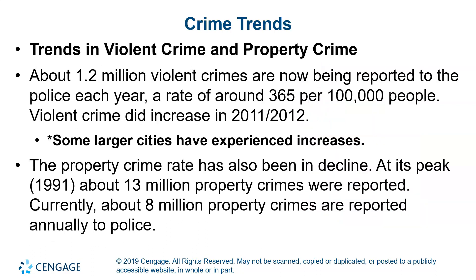About 1.2 million violent crimes are now being reported to police each year, a rate of around 365 per 100,000 people. Violent crime did increase in 2011 and 2012, and some larger cities have experienced some increases recently. The property crime rate has also been in decline — at its peak in 1991, about 13 million property crimes were reported; currently about 8 million property crimes are reported annually to police. But we don't know about those unreported crimes.